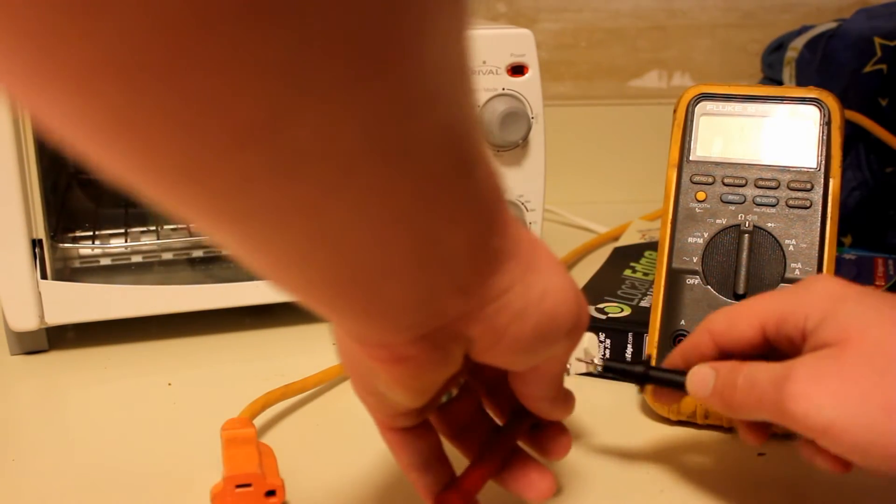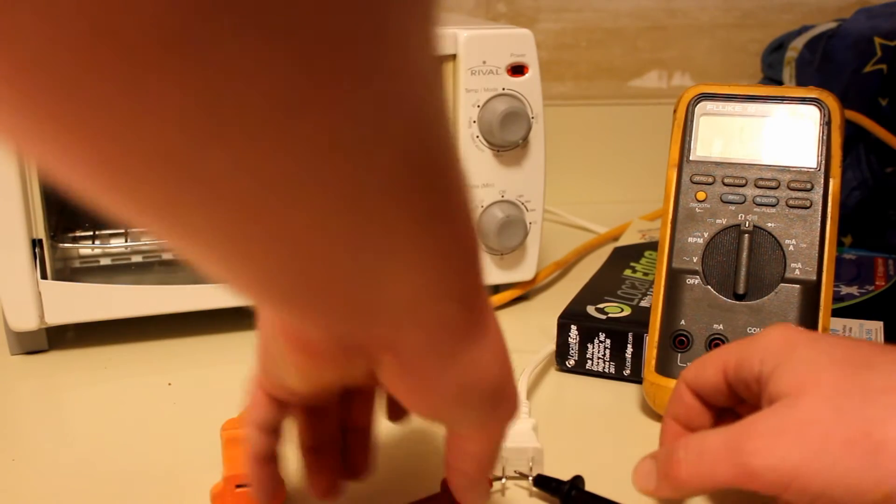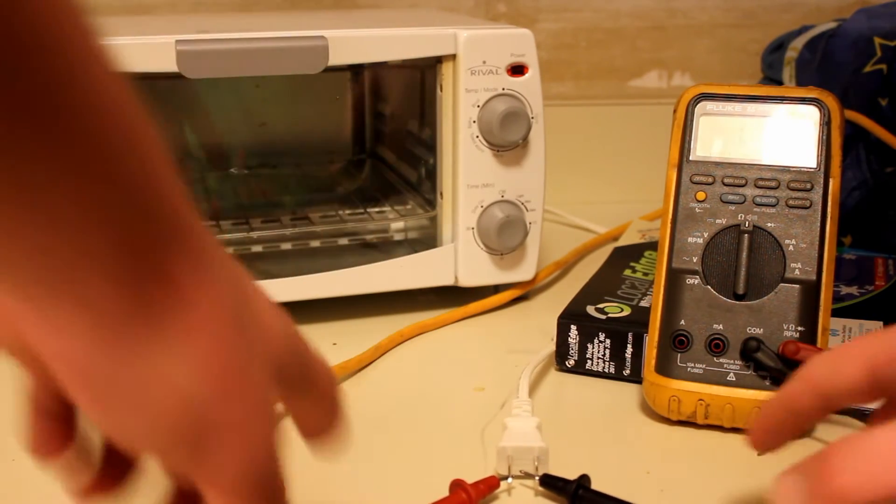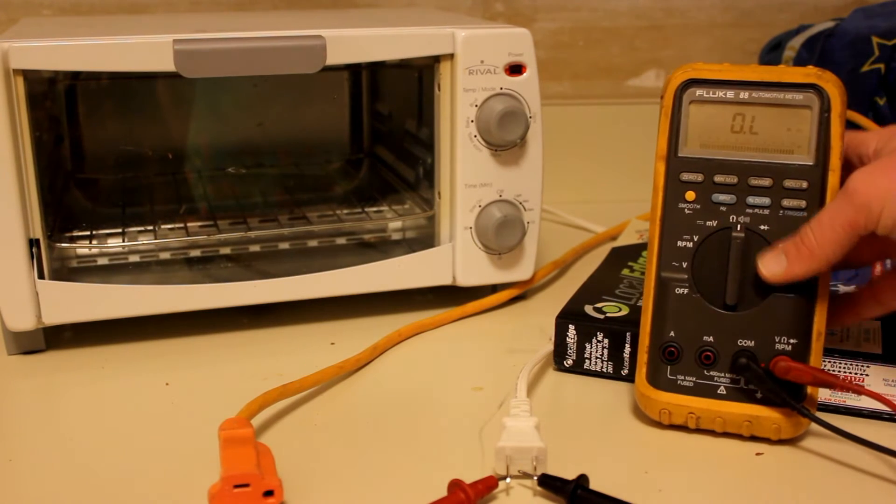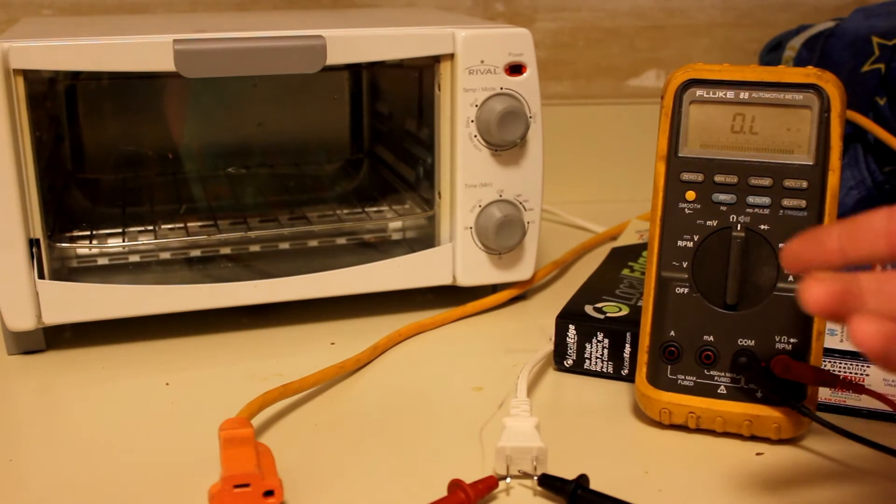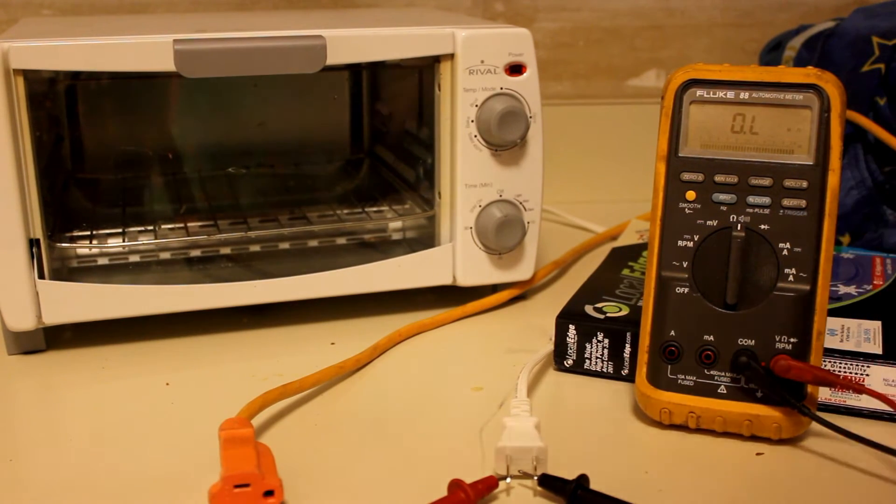Because if it was, you'd get that little reading here. Let's see where it says OL—that would indicate a broken circuit or an open circuit, and that would tell you why that's not working.